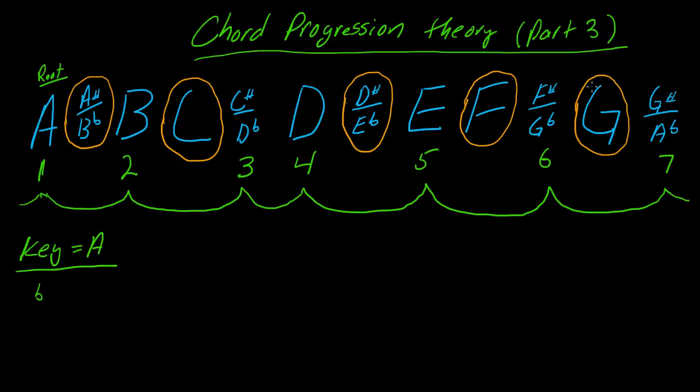So flat 7—let me actually write this over here—flat 7 in a key of A would be a G. F sharp here is between 5 and 6; you would call that flat 6.